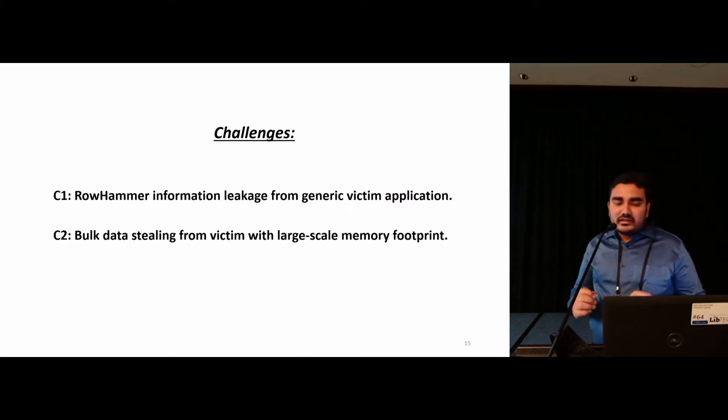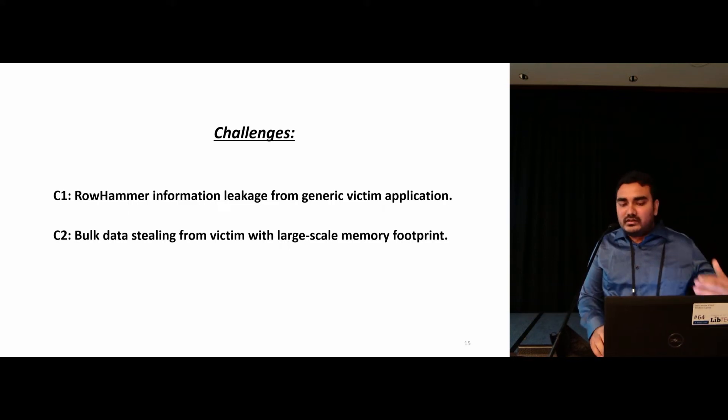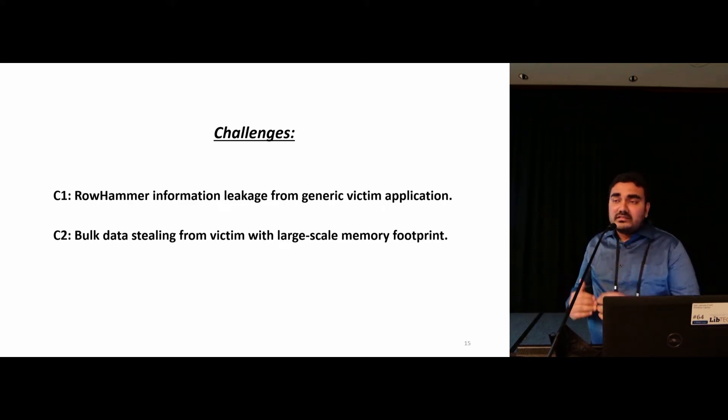However, there are some constraints in the current form of the attack which may potentially prevent it from applying it to large victim applications such as DNN model inference. For example, they require a special property in victim application in memory duplication which may not be generic enough. This poses the first challenge: how we can perform a generic rowhammer-based information leakage without relying on a specific victim characteristics. Furthermore, prior work only shows recovery of cryptographic key up to hundreds of bits but DNN models typically range from millions of parameters and applicability of this type of exploit in the large-scale victim models is still unknown to us. This raises our second challenge: how can we apply rowhammer-based information leakage to recover secrets from bulk victim application.